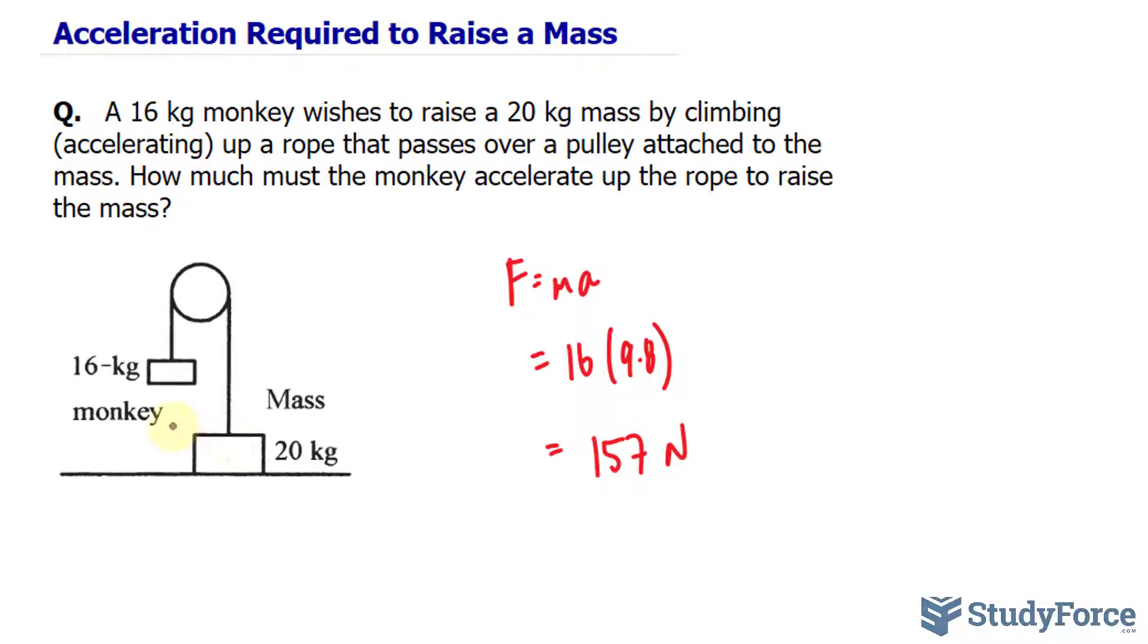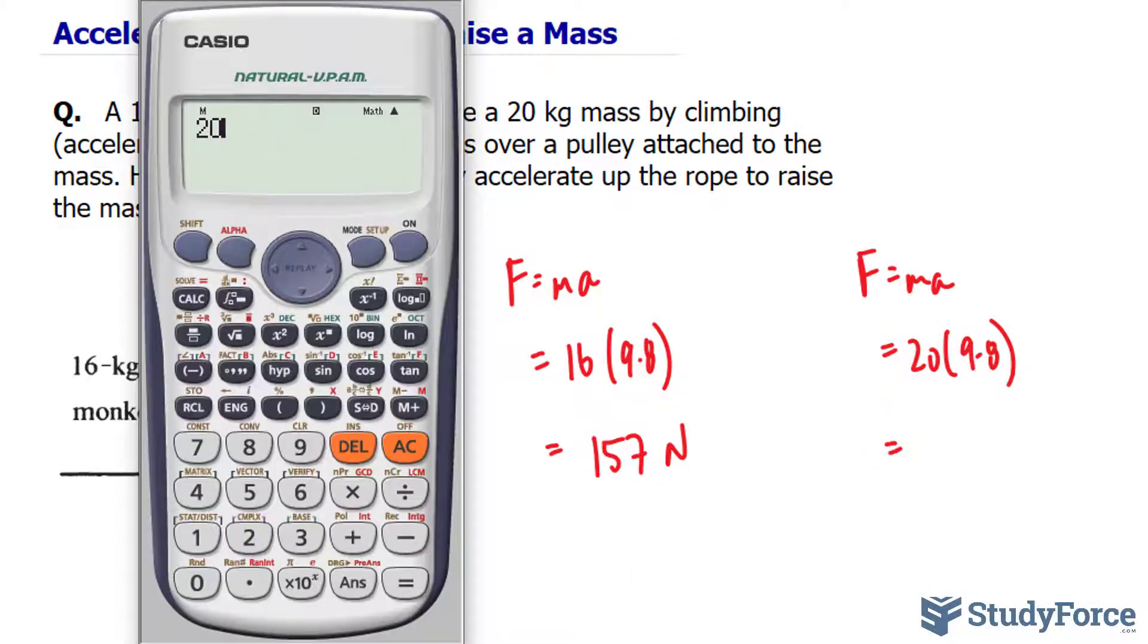Now we'll do the same thing for this mass. Again using the same formula, force is equal to mass times acceleration. We have 20 times 9.8, multiplying these two numbers out, we end up with 196.